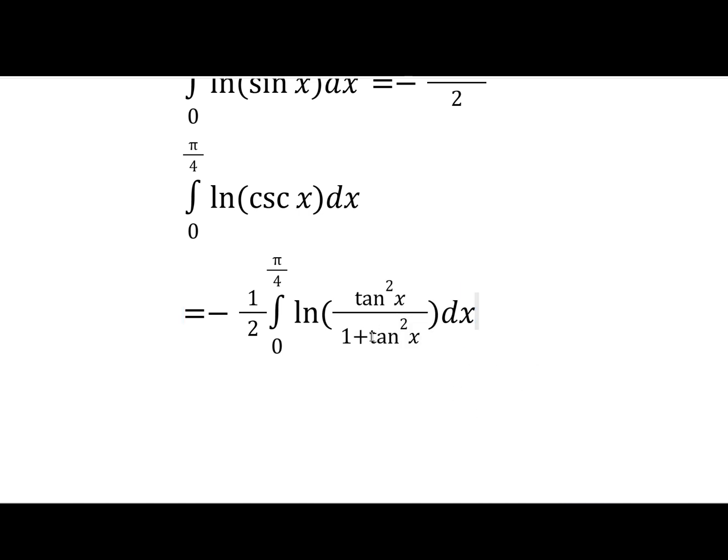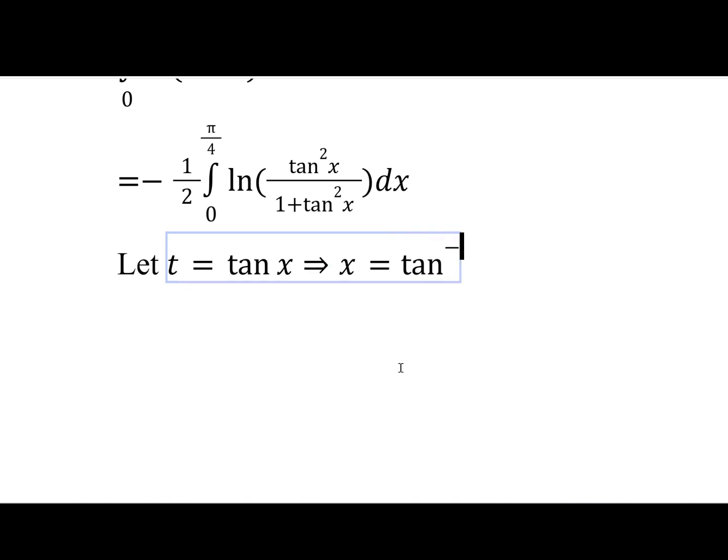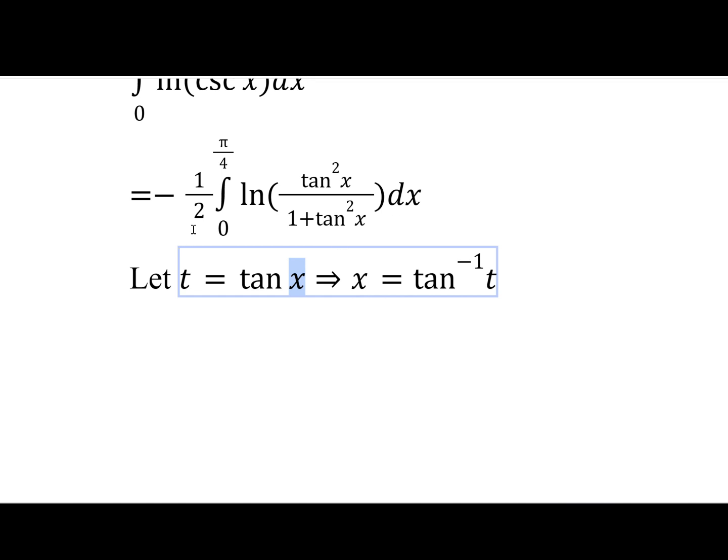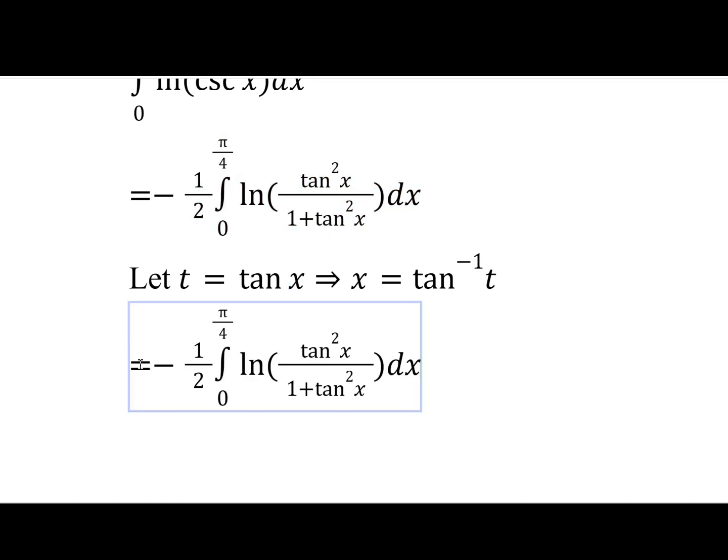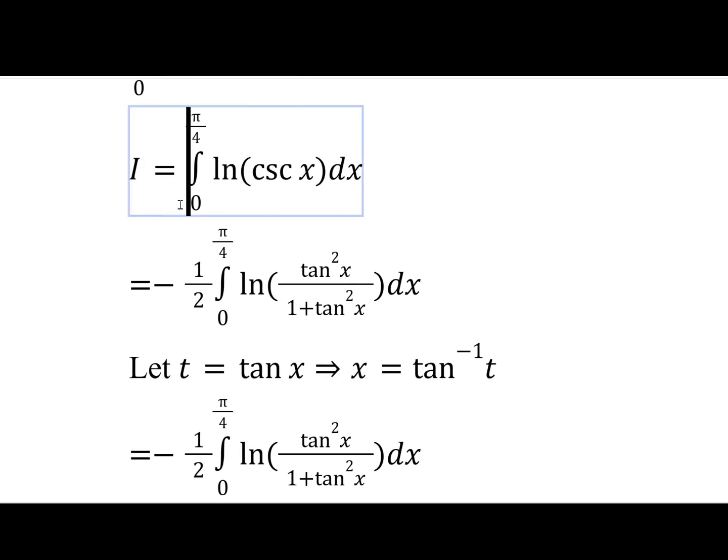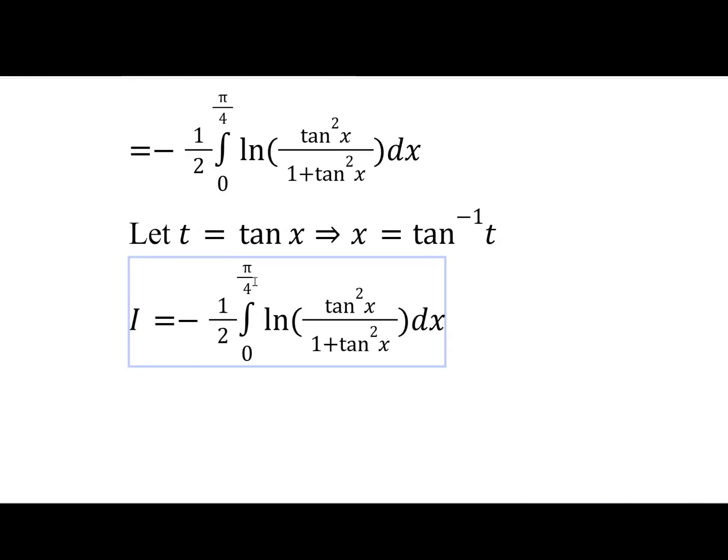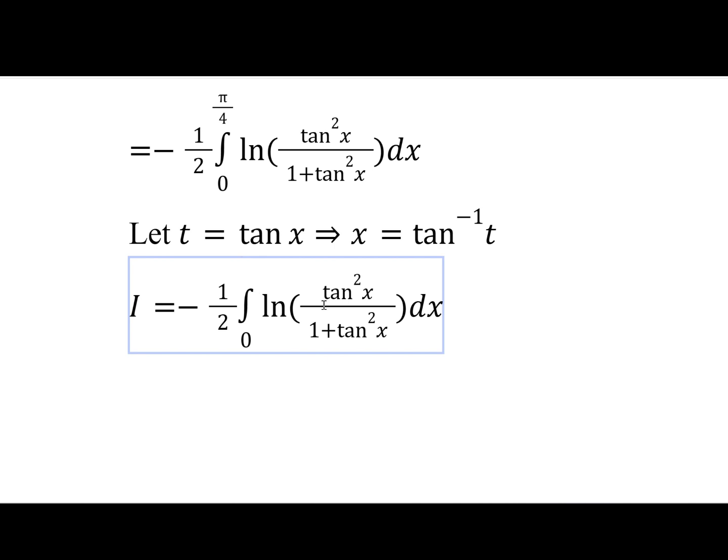And so we'll let t equal to tan x. And obviously this means that x is inverse tan t, which is fine because x here is between 0 and π/4, so it's clearly in the right range for it to be equal to inverse tan t. Also, we should probably call this integral I. Okay, so the bottom bound will become 0, and the top bound will become tan π/4, which is 1.